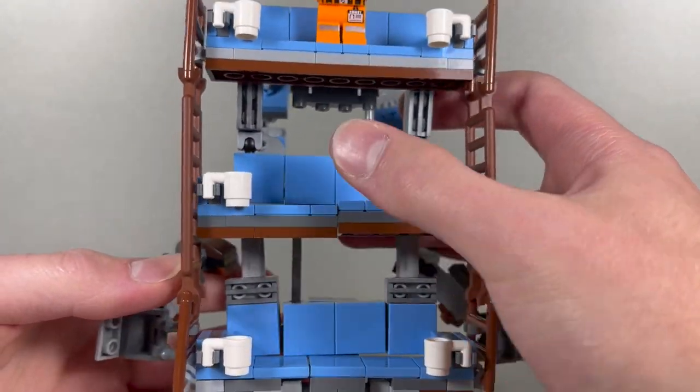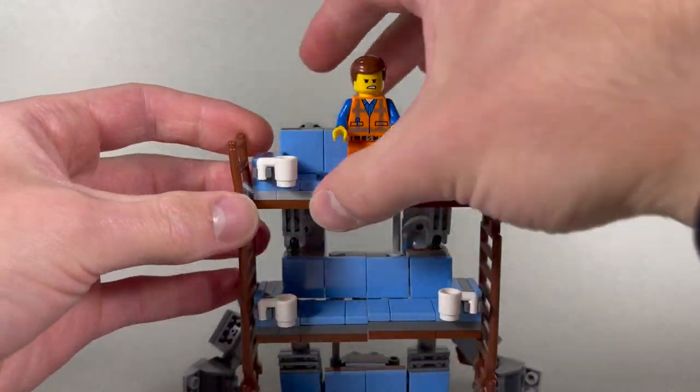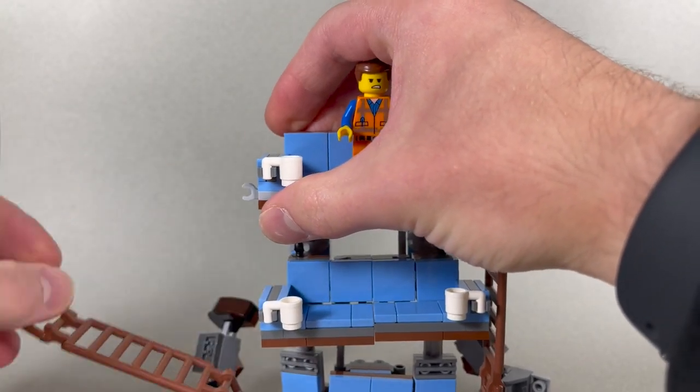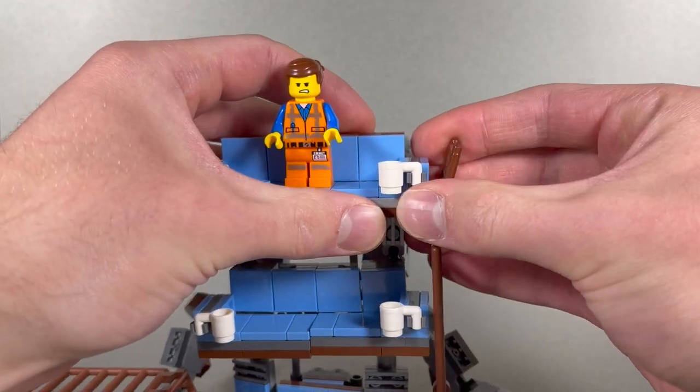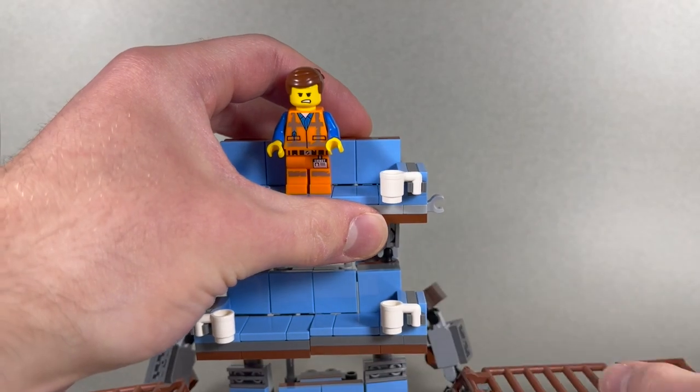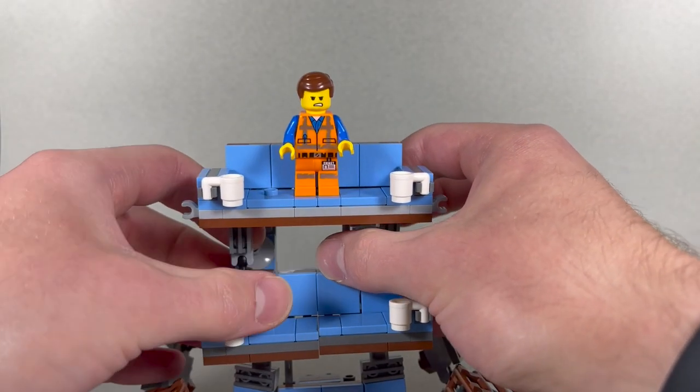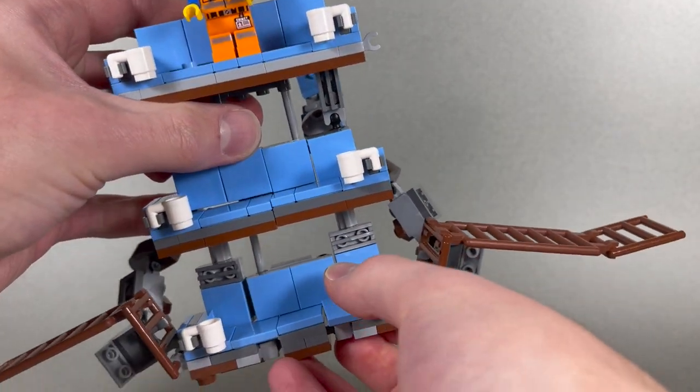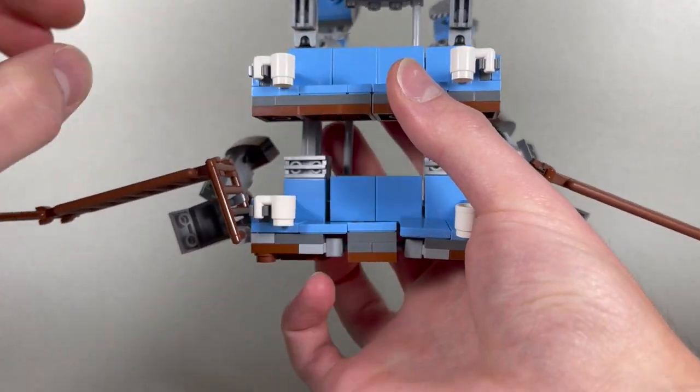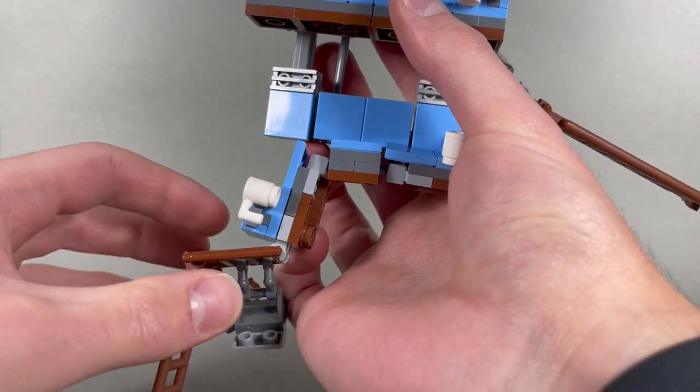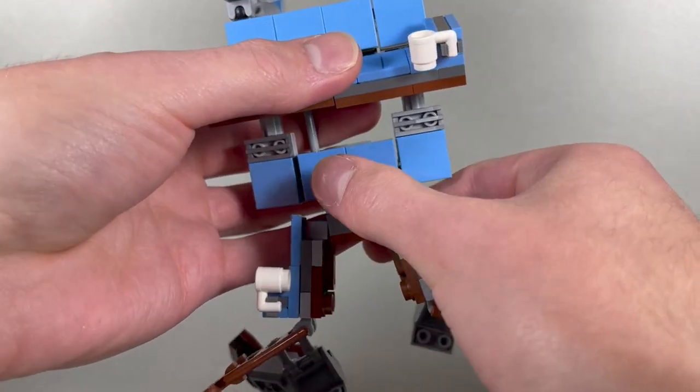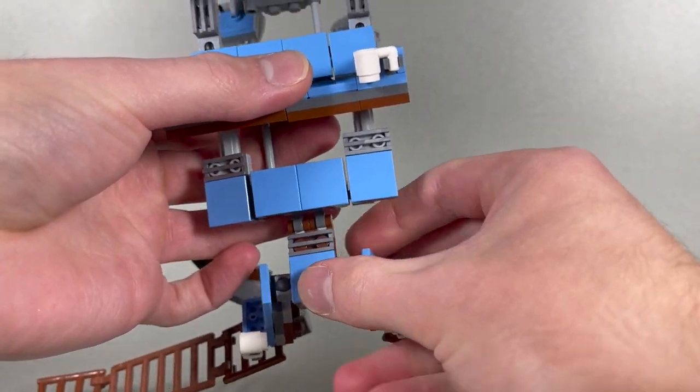And then we can worry about finishing off the bottom of the legs a little bit later. Now we can come up here and detach the ladder from both sides of the topmost couch. Allow them to just fold down to the side. So that basically freed the legs up, and we can take them and bring them down.